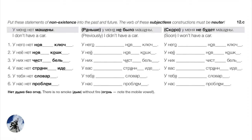Now let's switch to non-existence — be really careful here. English is no help whatsoever. We must use the genitive everywhere; we can't leave the word in the nominative because there are no subjects. For example: У меня нет машины. У меня не было машины. У меня не будет машины. — I don't have a car. I didn't have a car. I won't have a car.